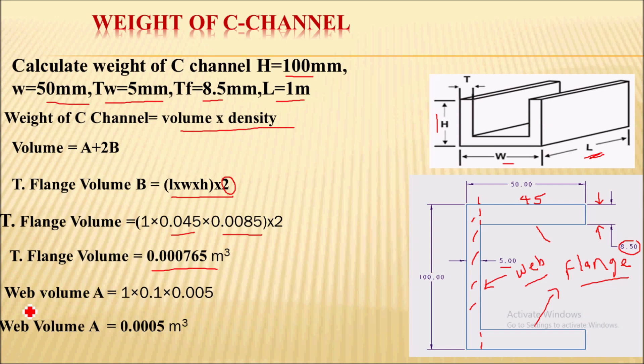Now similarly we will calculate the web volume, which is length times width times height. Length is 1 meter, width for web is 100mm converted to 0.1m, times web thickness 5mm which is 0.005m. After calculating, we get 0.0005 m³.